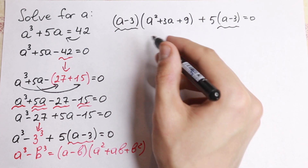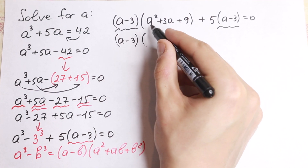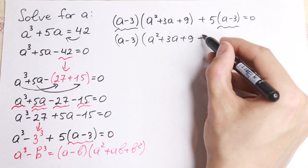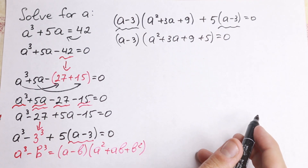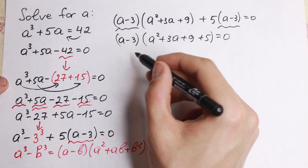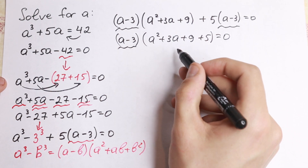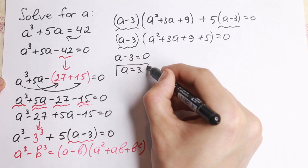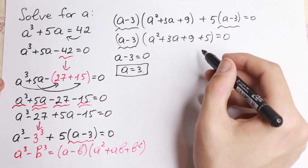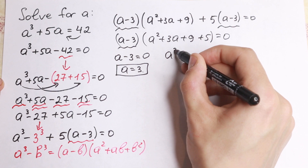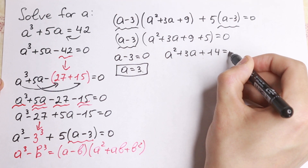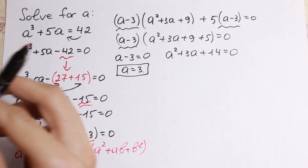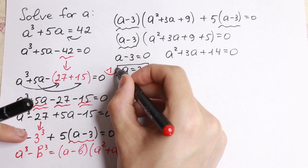We factor out a minus 3, giving us a minus 3 times a squared plus 3a plus 9 plus 5, equal to zero. That simplifies to a minus 3 times a squared plus 3a plus 14 equal to zero. By the zero product rule, a minus 3 equal to zero gives us the first root: a equals 3.